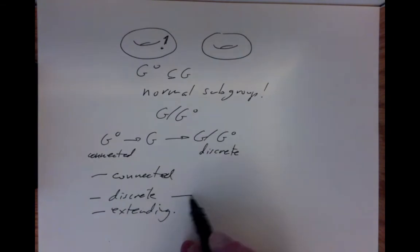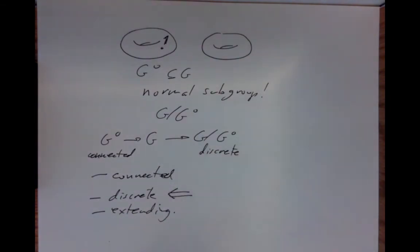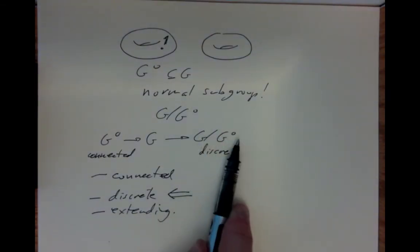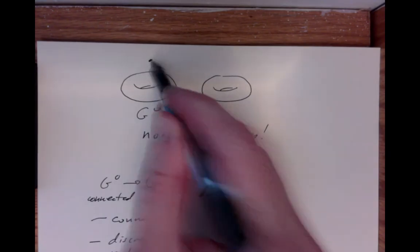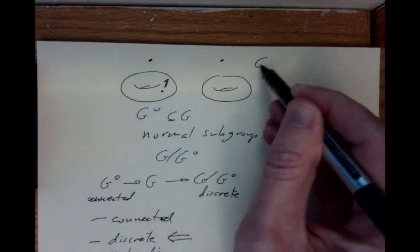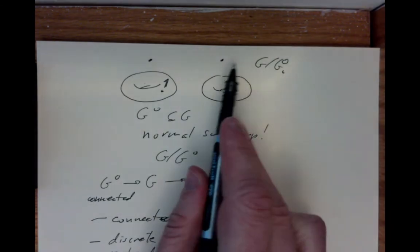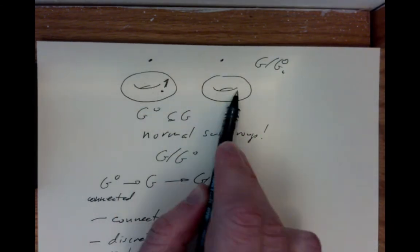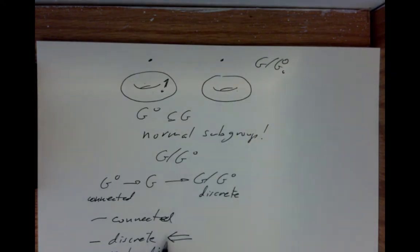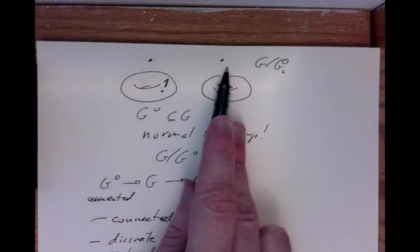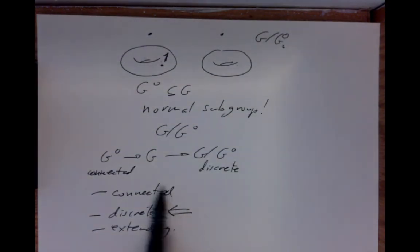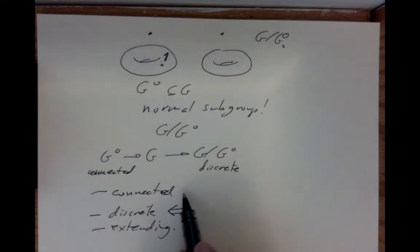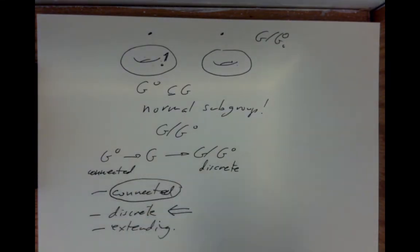All three problems are not solvable in general. Nobody knows how to find all the connected Lie groups, all discrete groups, or all the ways of extending. But in practice, discrete groups that show up aren't very complicated. The quotient group G/G0 is the group of components: it has a point for each component of the original group. So by and large, we're mostly interested in the connected ones, and from now on we'll focus attention on connected Lie groups.